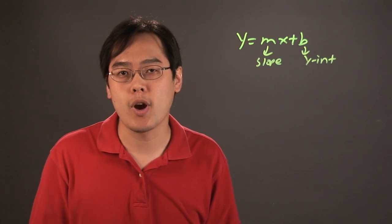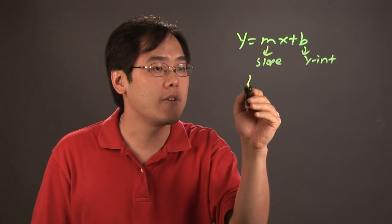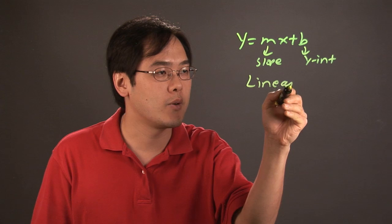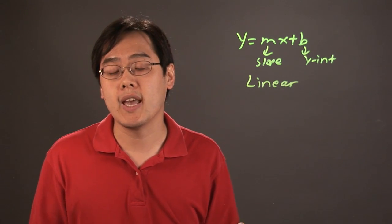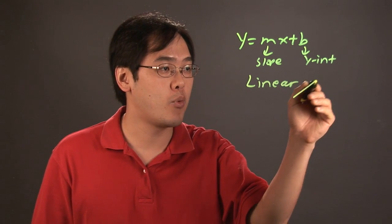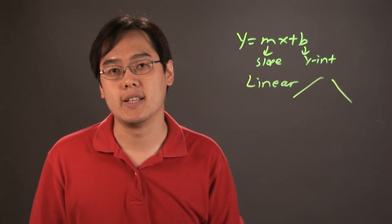A couple things to consider when it comes to writing a word problem in slope-intercept form is you definitely want to communicate to the reader that it's going to be linear, or words that indicate that we're talking about either an upward line or a declining line.